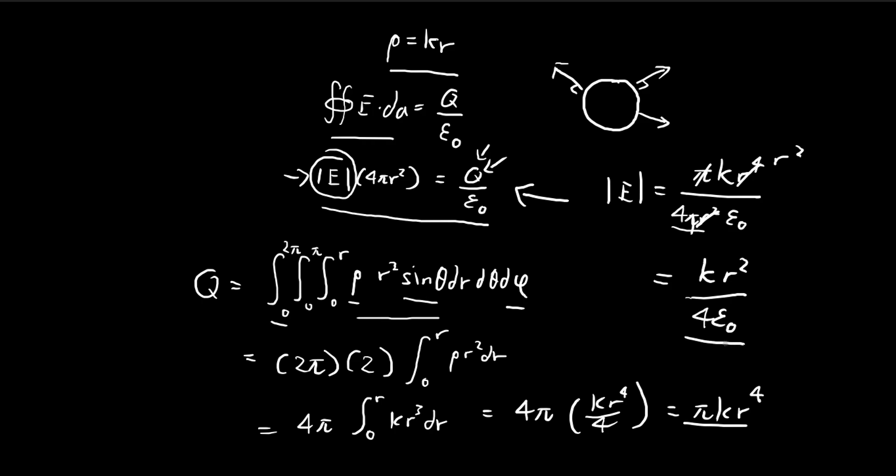And don't forget, this is the magnitude of the electric field. And in order to make it a vector, we can add the R vector to this expression. So there we have it. This is our answer, this is the electric field.